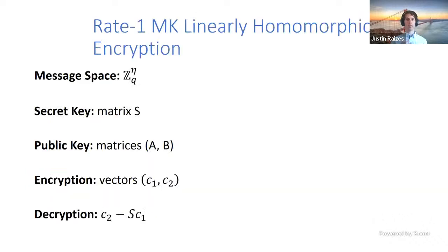At the heart of our communication improvements is a construction of rate-one multi-key fully homomorphic encryption, which was not previously known. As a building block, we also construct rate-one multi-key linearly homomorphic encryption. The multi-key property allows parties to merge their keys instead of computing one master secret key, saving a few rounds. The rate-one property ensures encrypted messages have roughly the same size as the ciphertexts.